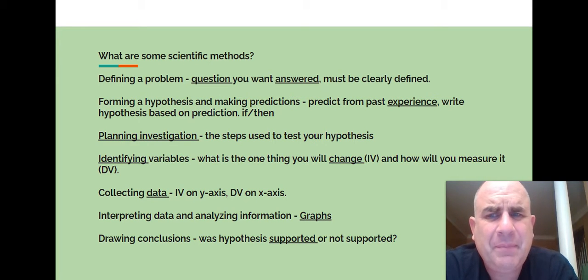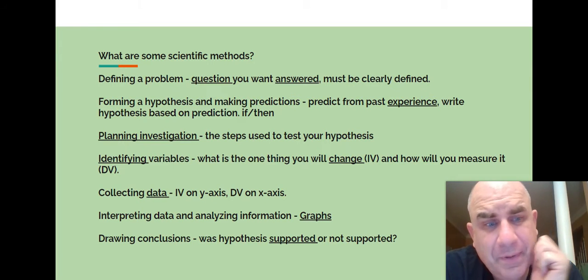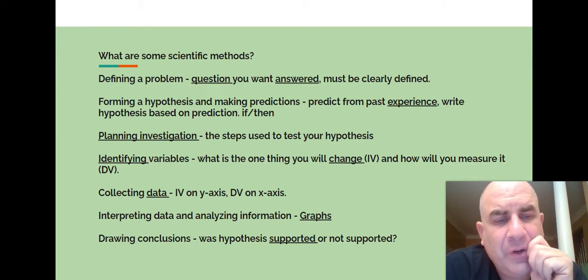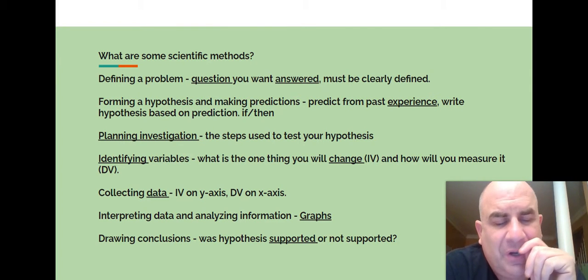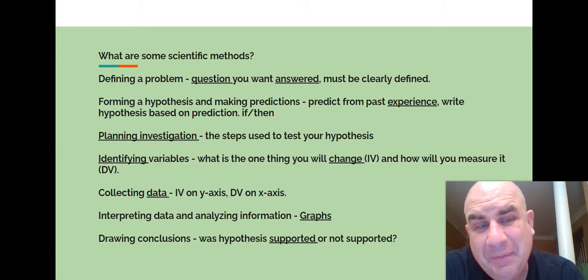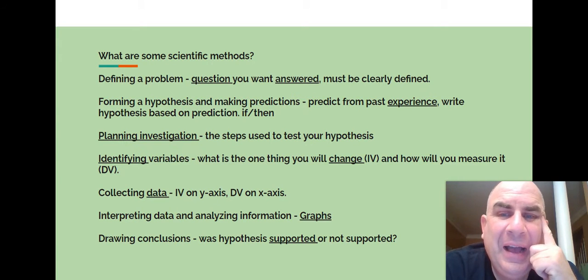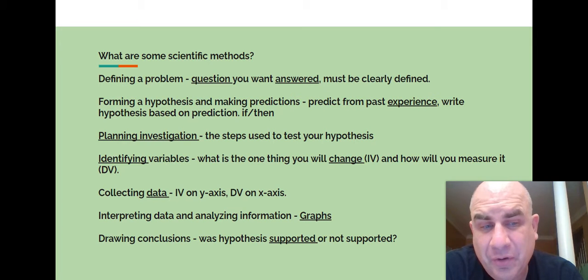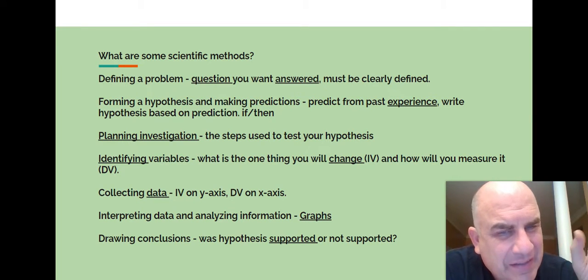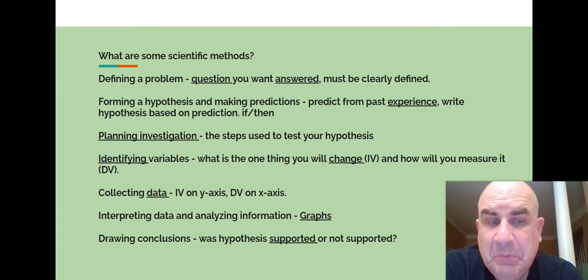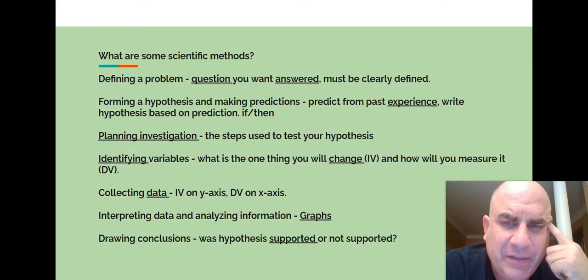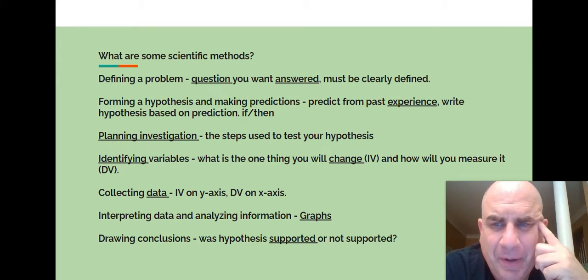What are some scientific methods? Defining a problem: the question you want answered must be clearly defined. If we do this to the coronavirus, then it will stop mutating. Kind of one of the big hypotheses right now. The problem is we've got to try to control the coronavirus, but we've got to do a hypothesis that we can test. Forming the hypothesis or making predictions: predict from past experience. What do we already know? Planning the investigation: the steps used to test your hypothesis. We're going to really dive into this next time, but I want to introduce this. It's just too much for one class period.